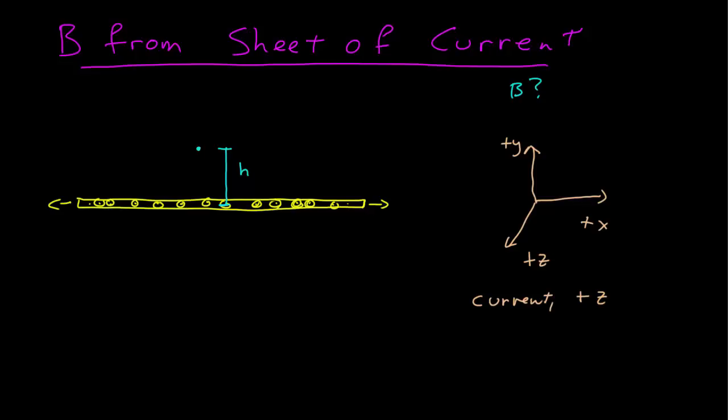What is going to contribute to the field? If I look at the current immediately below the point I'm looking at and use the right-hand rule, I point my fingers in the direction of the current — out of the screen — and then curl them toward the point above. If you do that with your right hand, you'll find it contributes a magnetic field in the negative x direction.